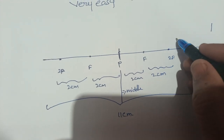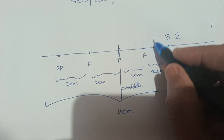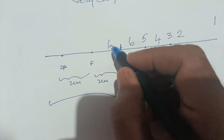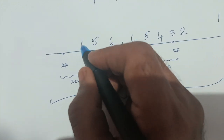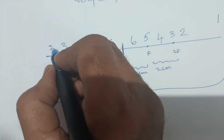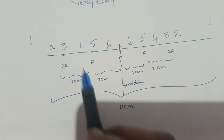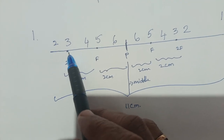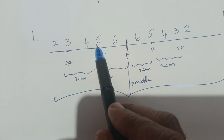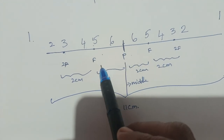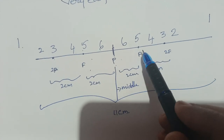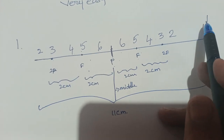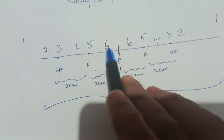1, 2, 3, 4, 5, 6 — again 6, 5, 4, 3, 2, 1. I will explain what each number means: 1 is infinite, 2 is beyond 2f, 3 is at 2f, 4 is between f and 2f, 5 is at f, and 6 is between P and f. Similarly on the other side: 6 between P and f, 5 at f, 4 between f and 2f, 3 at 2f, 2 beyond 2f, 1 infinite. So I am taking 6 places on both sides.